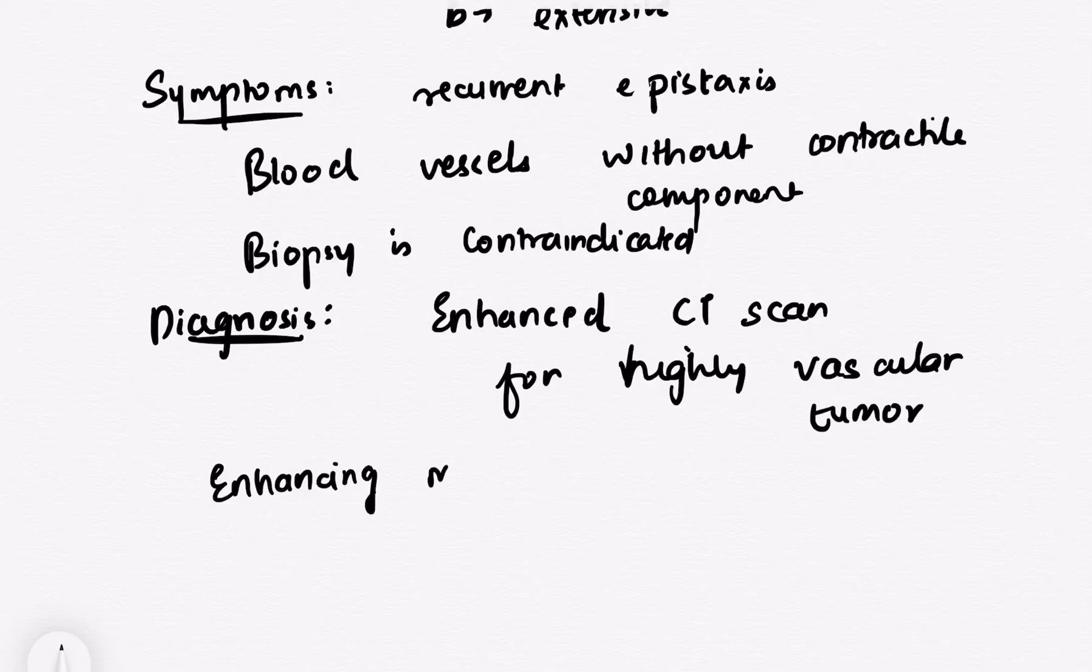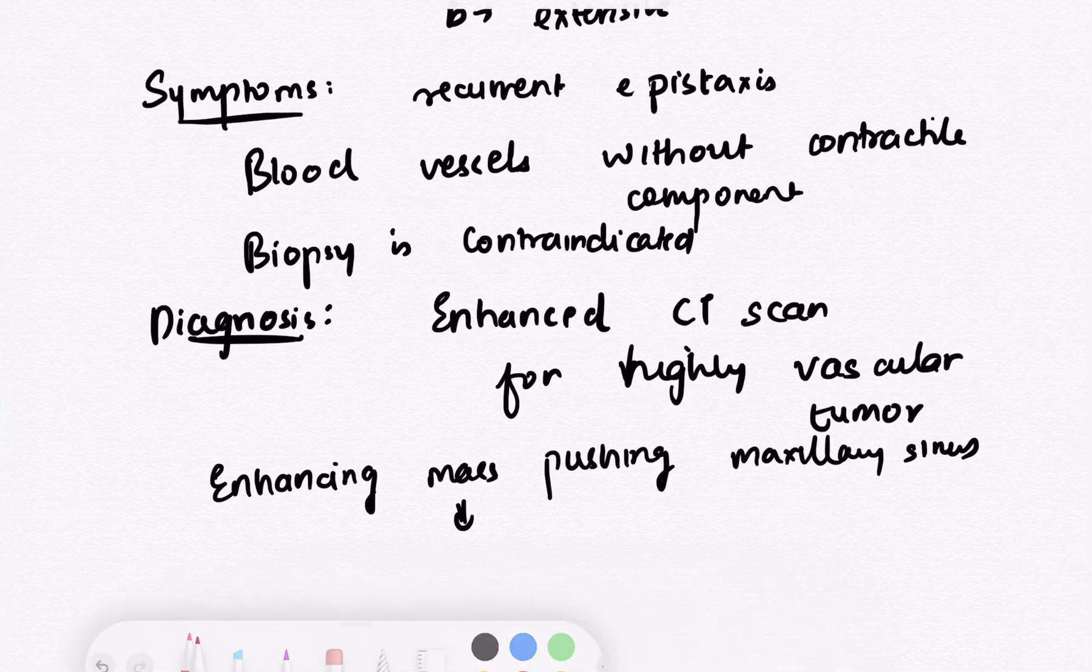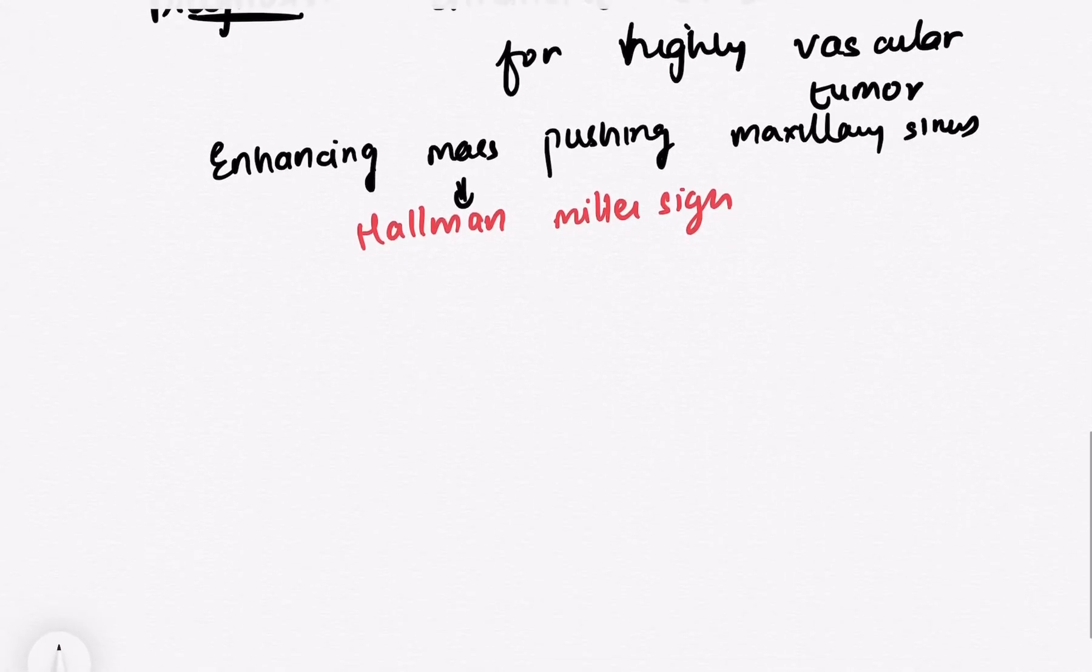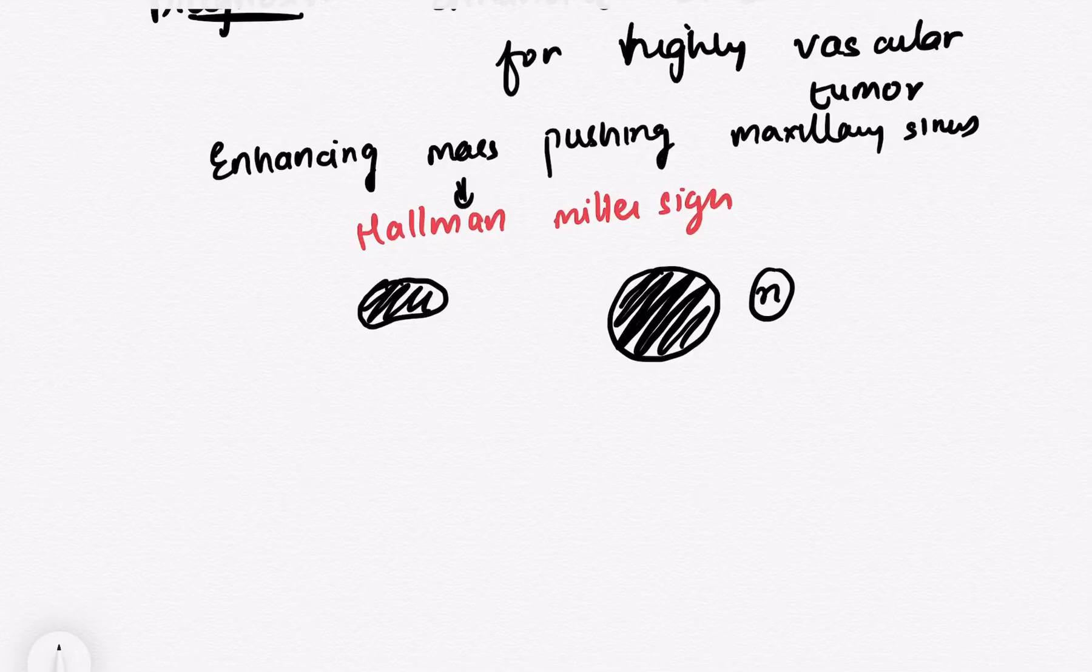So this is known as Holman-Miller sign which is one of the very important sign in the ENT. Holman-Miller sign. Basically you can see in a CT scan that you can compare with the opposite side. The opposite side which is normal, the maxillary sinus can be seen as a big black cavity on the normal side. While on the abnormal side, you can see that the black cavity has reduced and an enhancing mass is pushing the black cavity that is maxillary sinus.